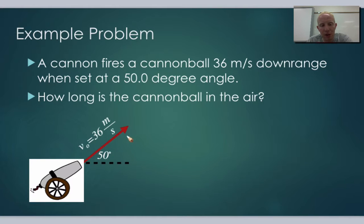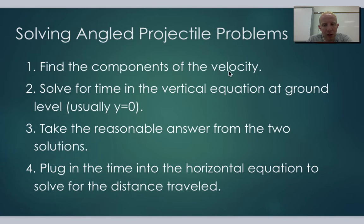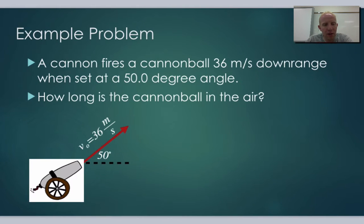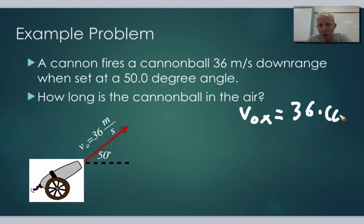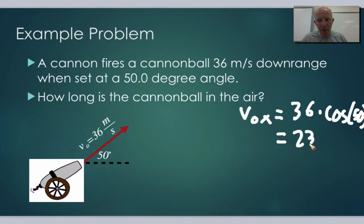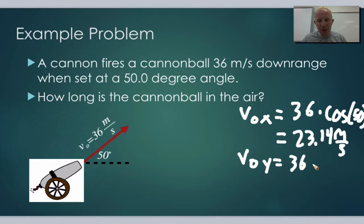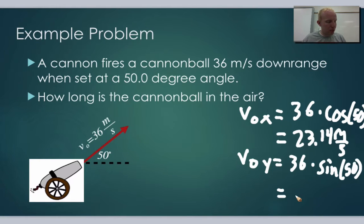We have v₀ equal to 36 meters per second. V₀x equals 36 times cosine of 50, which gives us 23.14 meters per second. And v₀y equals 36 times sine of 50, which gives us 27.58 meters per second.